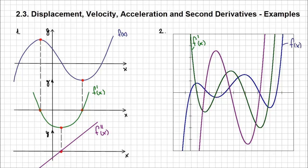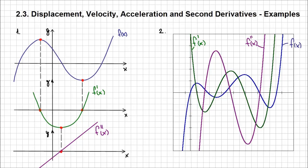Since only one curve is left, we can conjecture it should be the second derivative, but let's verify. Looking at the green curve, I identify three points where the slope of the tangent is zero. The purple curve intersects the x-axis exactly at those x-coordinates. So I can be certain that the purple curve represents the derivative of the green function, which was the first derivative of f of x. Therefore, the purple function represents the second derivative of f of x.